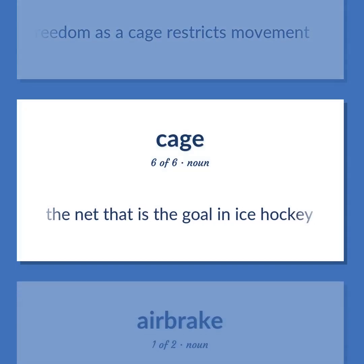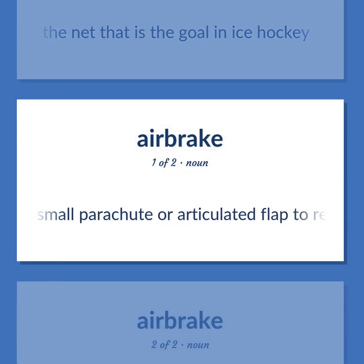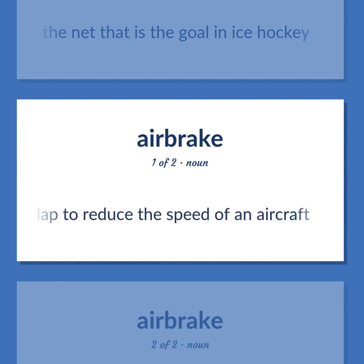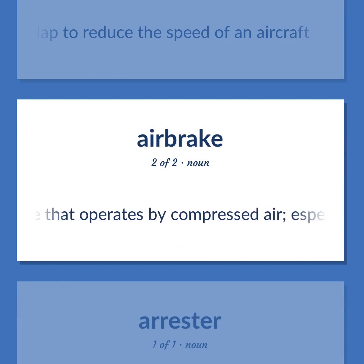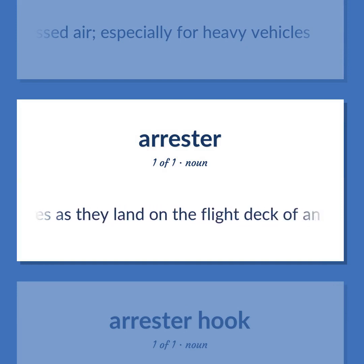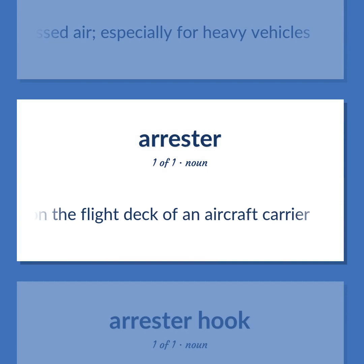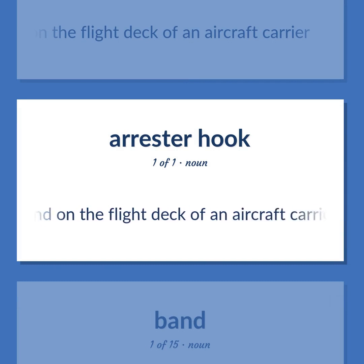Brake: The net that is the goal in ice hockey. A small parachute or articulated flap to reduce the speed of an aircraft. A vehicular brake that operates by compressed air, especially for heavy vehicles. A restraint that slows airplanes as they land on the flight deck of an aircraft carrier.